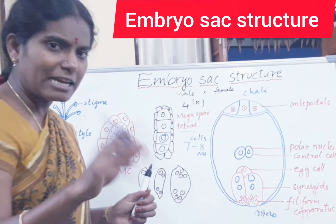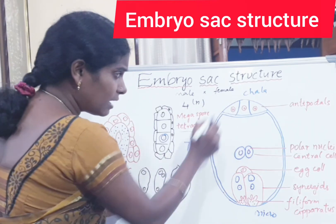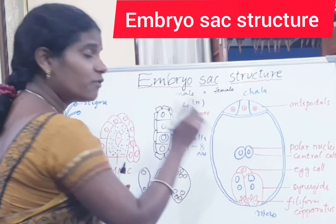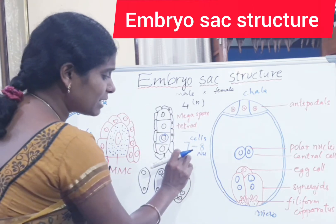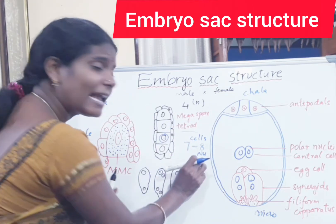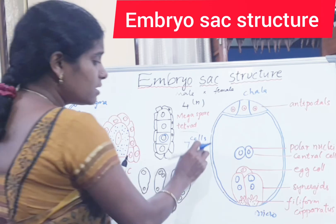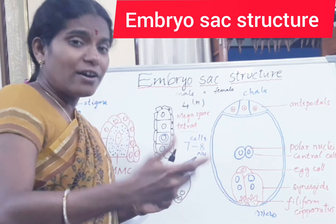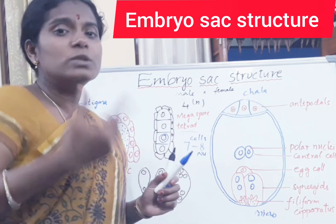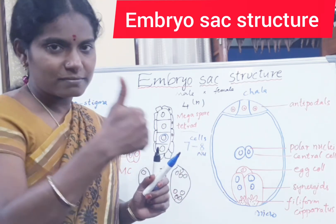So to summarize, the embryo sac of angiosperms is a 7-celled and 8-nucleate structure. In the next video, I will explain how fertilization is carried out. Thank you.